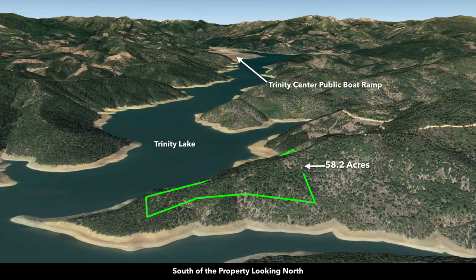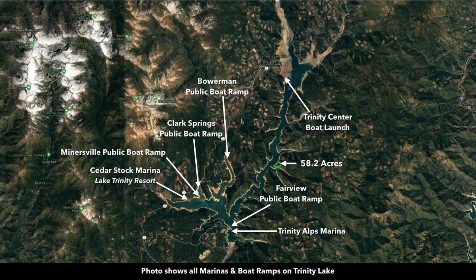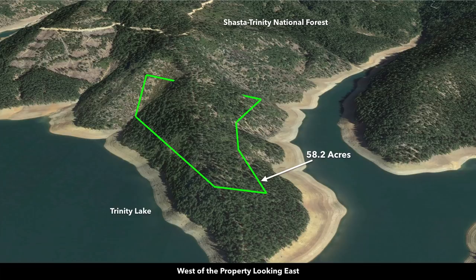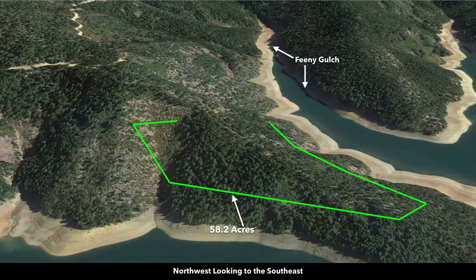This is south of the property looking north. You can see how the property slopes down to the lake. Up here is the Trinity Center public boat ramp. This property is really only accessible by boat, but there are boat ramps and marinas surrounding the property along the lake. This is the Trinity Center boat launch. Now we're southwest of the property looking northeast — here you can see Mount Shasta, which has an elevation of over 14,000 feet. Now looking from the west looking east, and then from the northwest looking southeast.